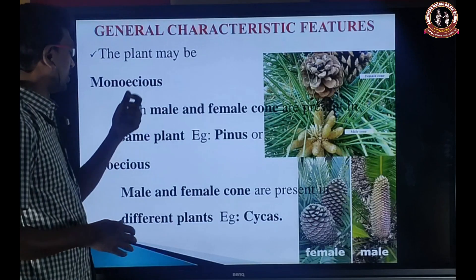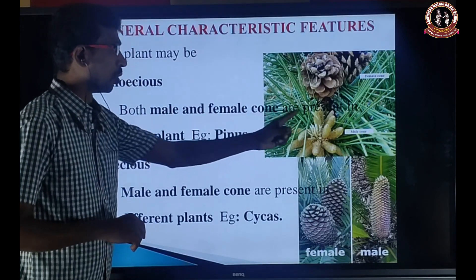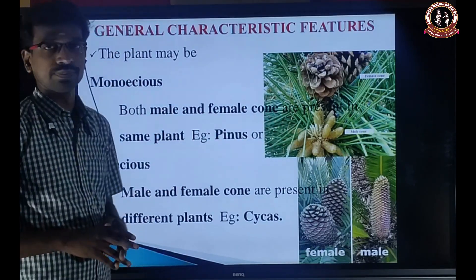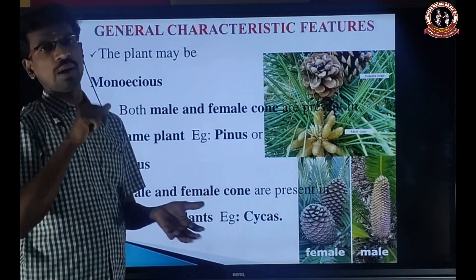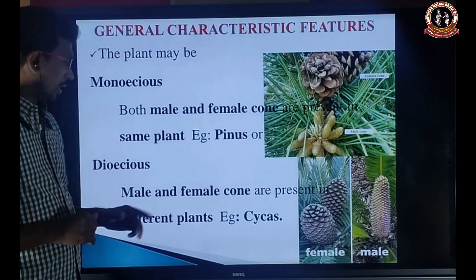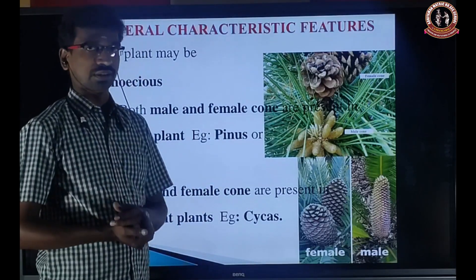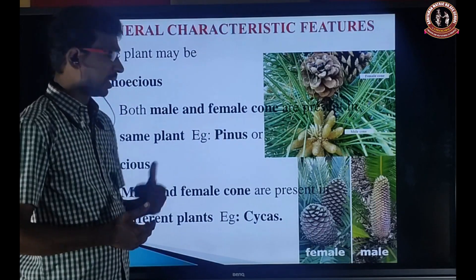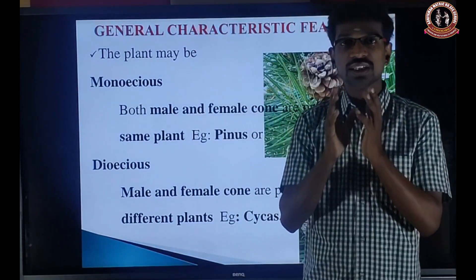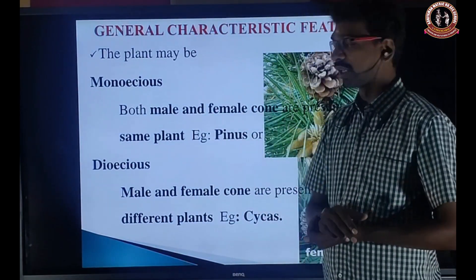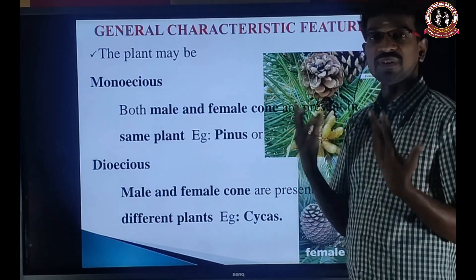The plant may be monoecious or dioecious. What is monoecious? Both the male and female cone are present in the same plant but on different branches — for example, Pinus. Dioecious means the male and female cone are present in different plants, or different parents — for example, Cycas. Monoecious means both male and female cone are present in the same plant but in different branches. Dioecious means male cone and female cone are present in different plants. Example of dioecious: Cycas.